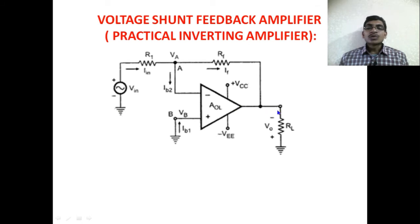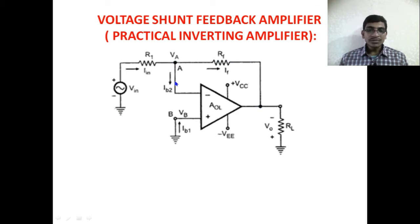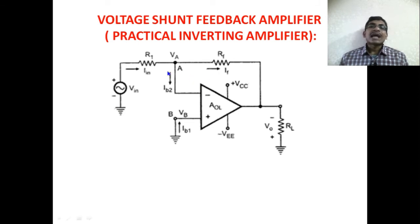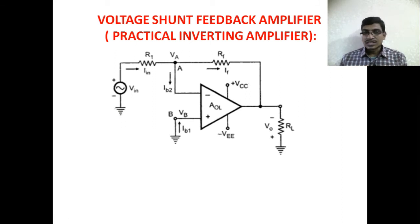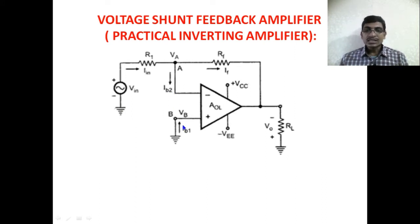The output voltage is V0 and RL is the load resistance. RF is the feedback resistance connected between the output and the inverting input of the operational amplifier. IIN is the input current, IF is the feedback current flowing in the feedback resistor, and IB2 is the current flowing into the base or input of the operational amplifier. It is called IB2 because this current flows into the differential amplifier stage — specifically into the transistor base. IB1 is similarly the input current for the other terminal.